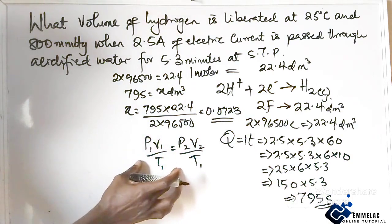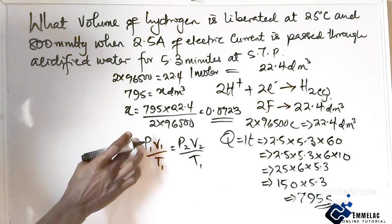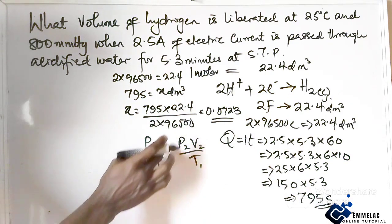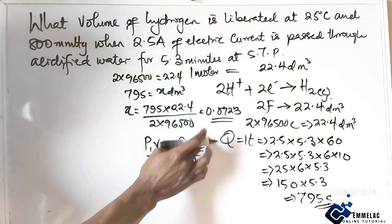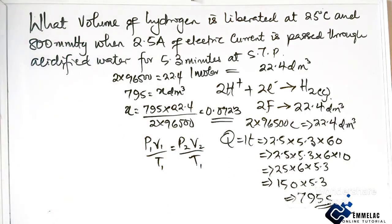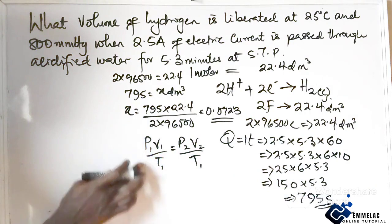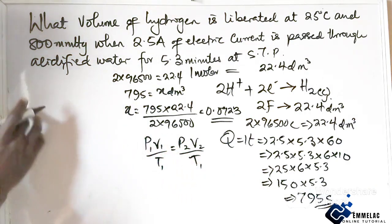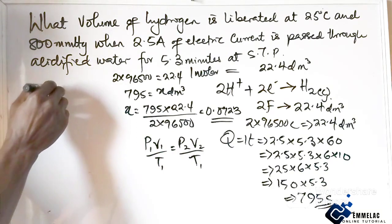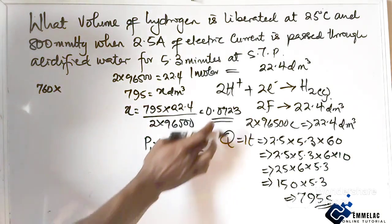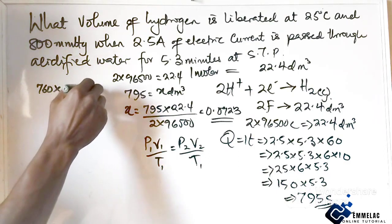Here we have the initial volume, the initial temperature, the final pressure, the final volume, and the final temperature. At this point, we have this at STP. So here P is 760 times our volume which is 0.0923 over the standard temperature 273.